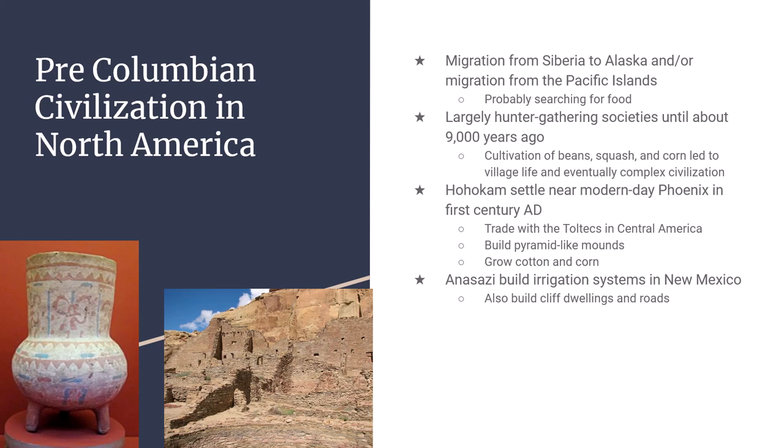Around 10,000 years ago or so, migration into North America begins across the Bering Land Bridge that connected Siberia to Alaska. The Bering Land Bridge is still there — it's just covered by the Bering Sea. About 10–15,000 years ago, there was much more water trapped in glaciers, so ocean levels were lower and you could walk from Siberia into Alaska. The people going from Siberia to Alaska were following their food source — they had no idea they were going into a new continent. They had no maps; they just followed their food.